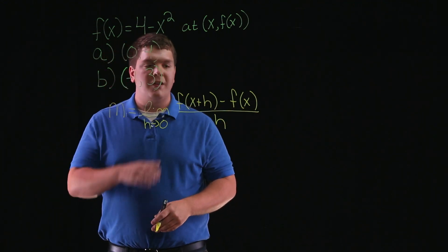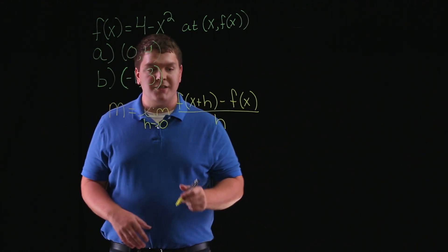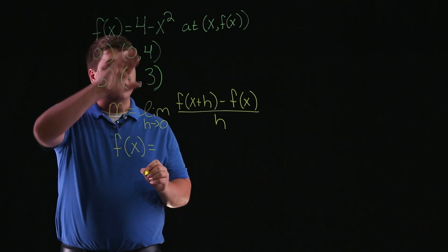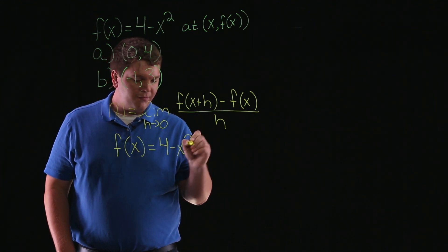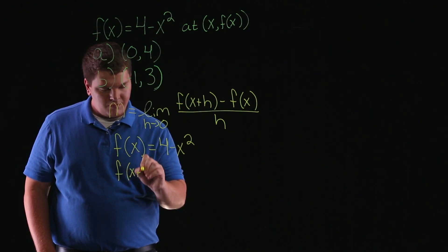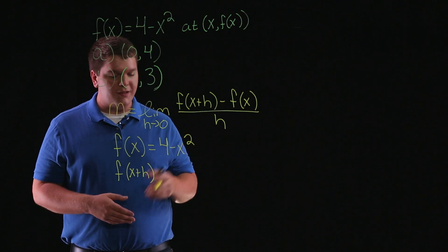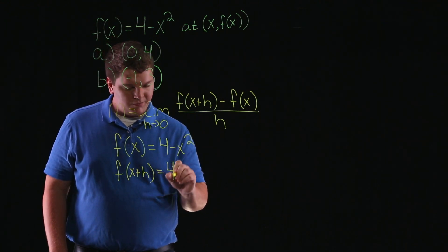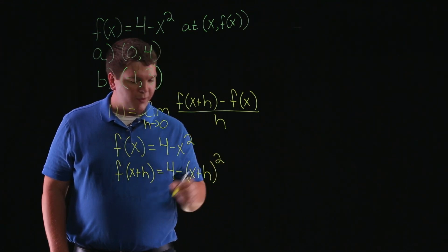Looking at our function, let's write down what f of x is and what f of x plus h is. We're given f of x is equal to 4 minus x squared. And f of x plus h is our function f of x, but everywhere there's an x, we substitute x plus h. So this leaves us with 4 minus the quantity x plus h, squared.